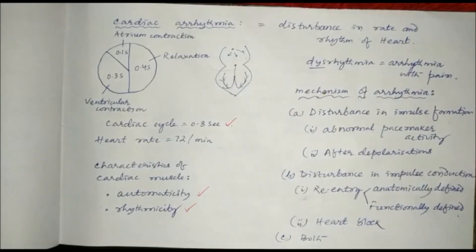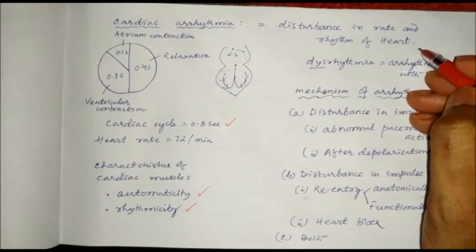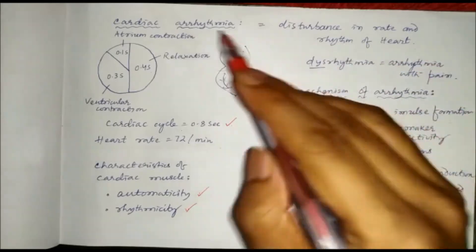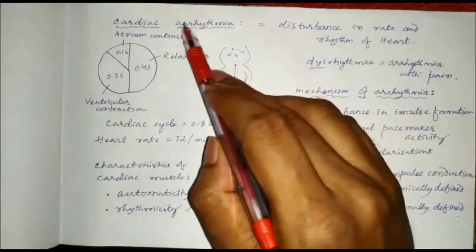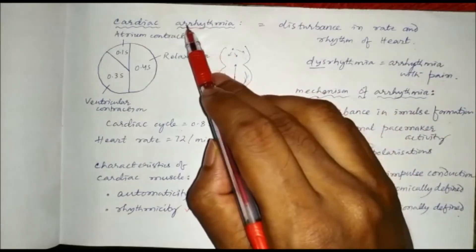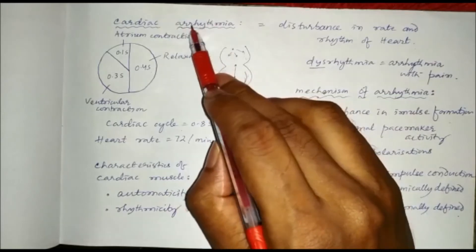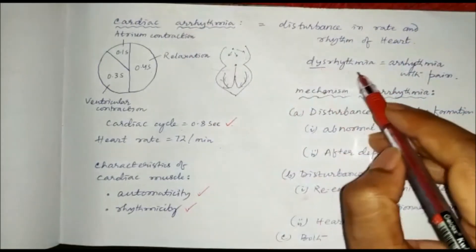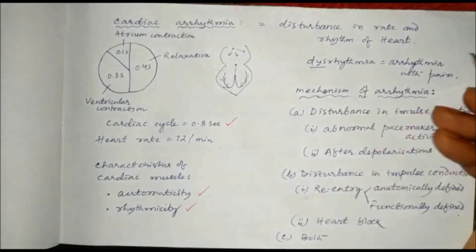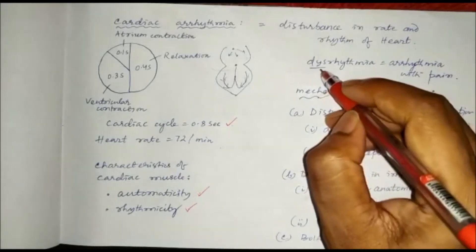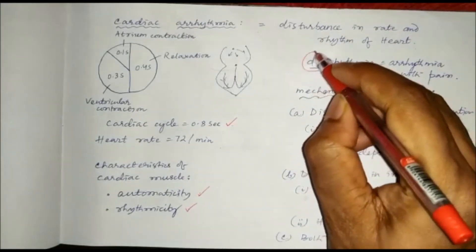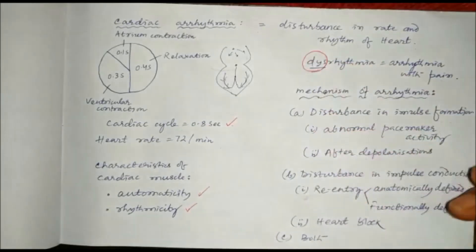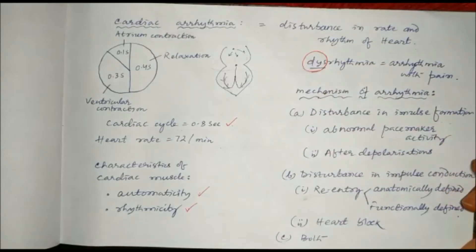So if there is any disturbance in the rate and rhythm of heart, that causes cardiac arrhythmia. Arrhythmia means the rhythm is disturbed. And there is another term called dysrhythmia — dysrhythmia means wherever you use the term 'dys', that means pain is associated, so arrhythmia with pain.